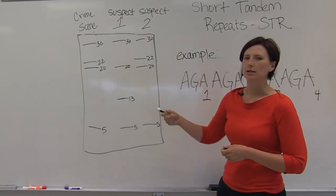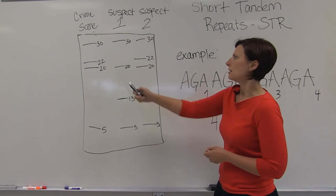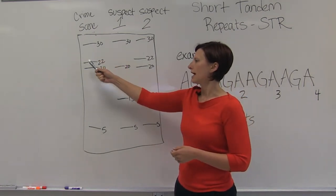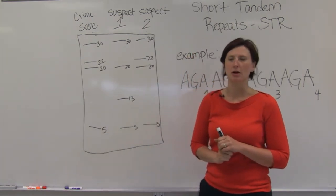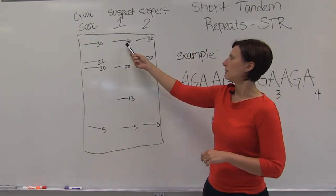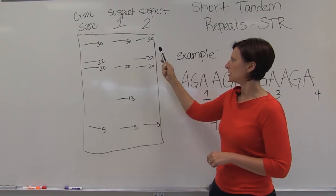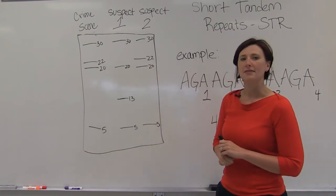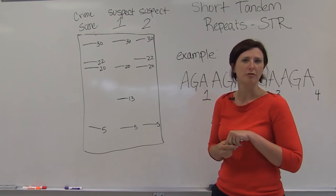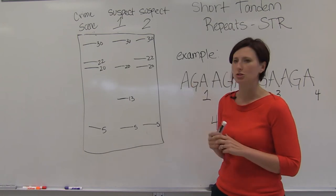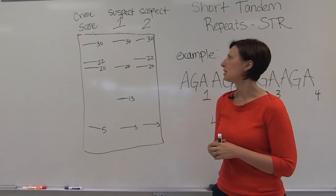Using gel electrophoresis, which separates DNA based on size, they can determine the length of fragments of repeats of the DNA left at a crime scene, the DNA of individual suspects, and then can match it up. The FBI uses 13 different loci of repeating fragments to determine whether or not a suspect's DNA matches the crime scene.